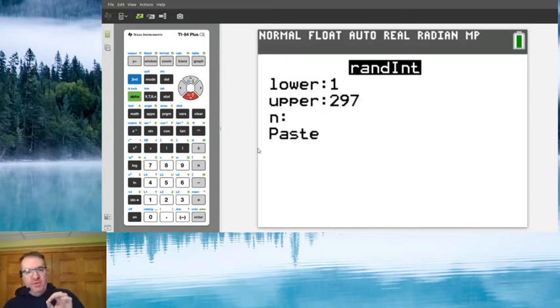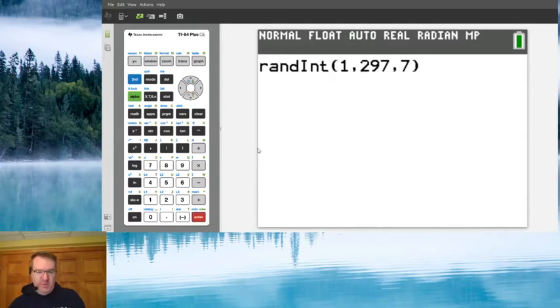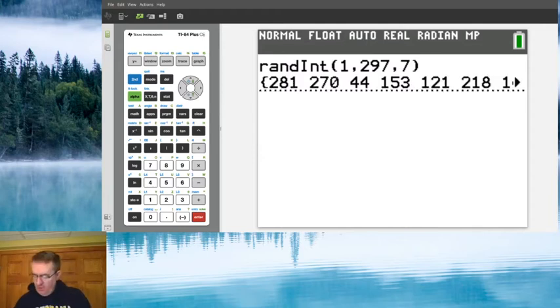So lower number is 1. My upper number is 297. And then how many different words do we want to pick? Now we want five. Since this is truly random, there is a chance that you might get multiples of the same number. So I usually will suggest that you pick a little bit, a few more than what you need. You're going to click on paste, you're going to run it.